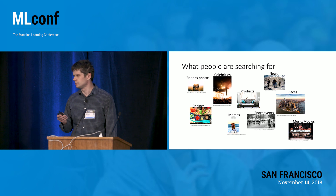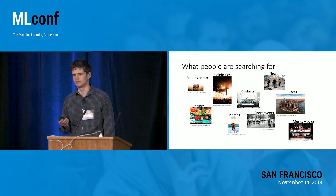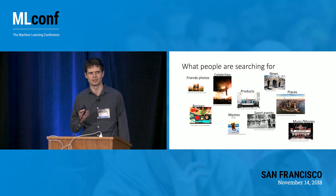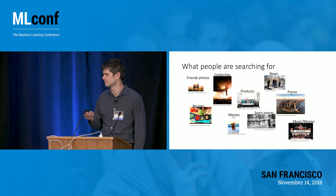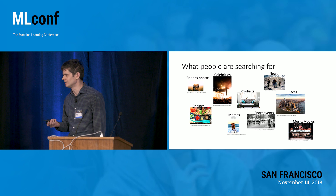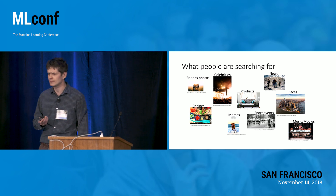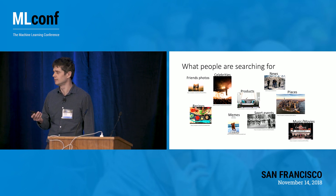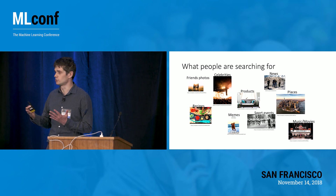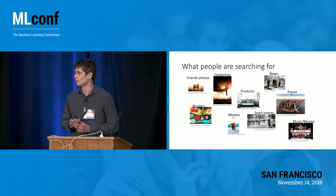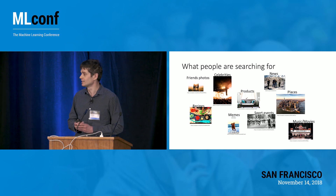When we talk about use cases, what kind of photos are people looking for on Facebook? Firstly, photos of their friends — that's probably the number one place to follow your friends and find where they traveled or what they enjoyed. People also follow celebrities, or they can search for products or news. They can research about places to go, about music and movies, sports events, or just have fun with memes.